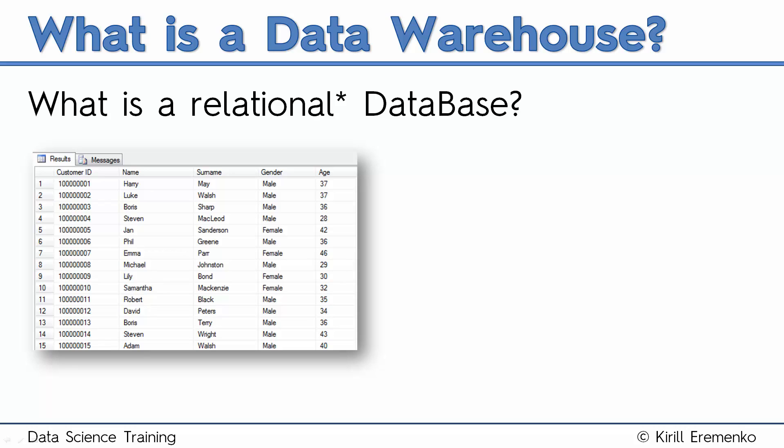A relational database, as the name suggests, is one where the relations between data within the database matter. In simplest terms, this means that data is stored in tables which have rows and columns, and the tables can be linked through common columns. Here you see an example of a relational database. Basically, a database is very similar to an Excel document, and tables in a database are just like tabs in an Excel spreadsheet.